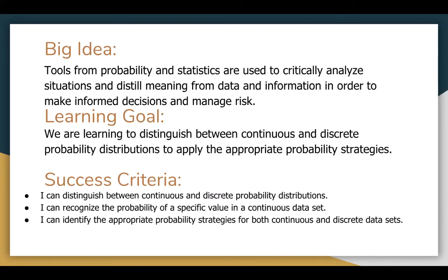So what we're really looking at today is the difference between continuous and discrete. Recognizing probabilities of a specific value, like 355. How do you calculate that? And just identifying probability strategies for continuous and discrete, with the focus really being on continuous. And so we're going to be calculating some probabilities again for continuous variables.